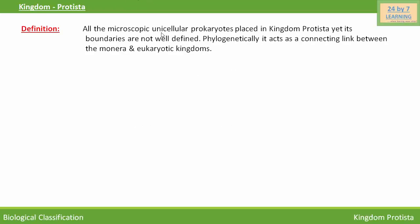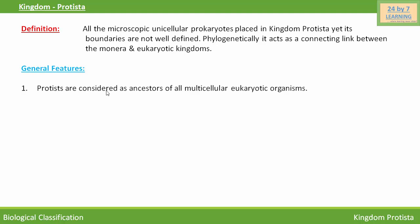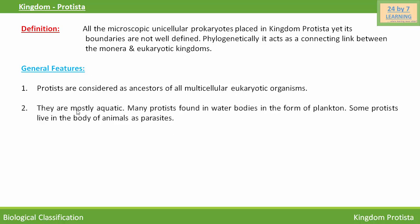All the microscopic unicellular eukaryotes are placed in Kingdom Protista. Its boundaries are not well defined phylogenetically. It acts as a connecting link between the Monera and eukaryotic kingdoms. Protists are considered as ancestors of all multicellular eukaryotic organisms.